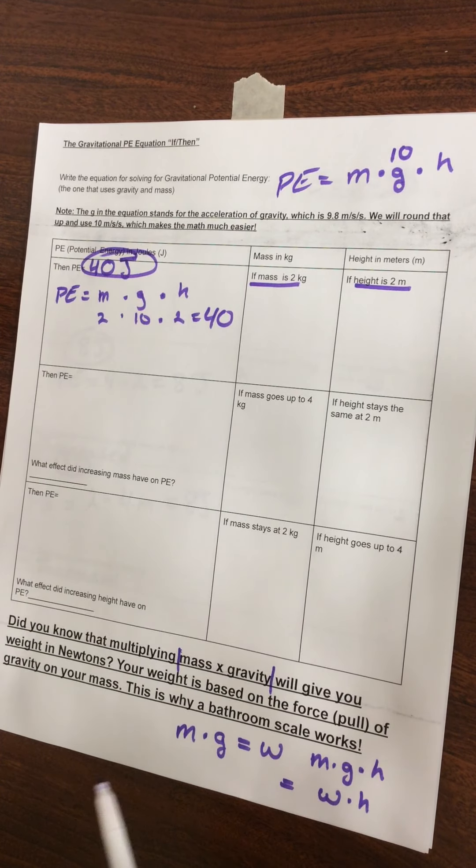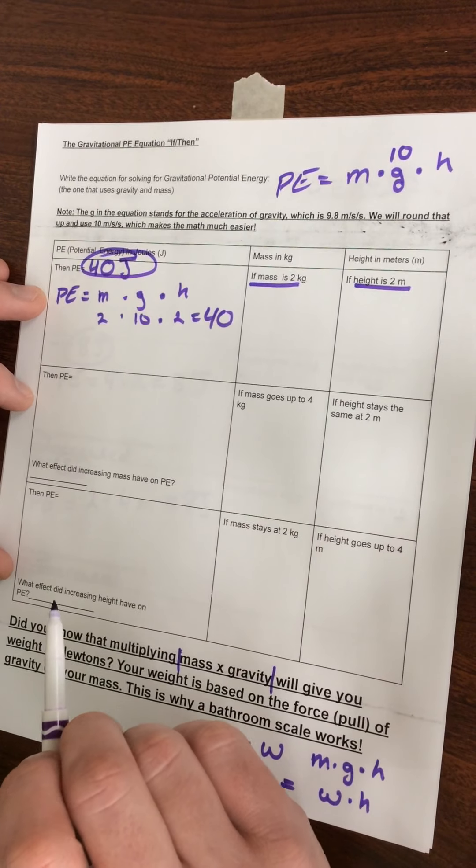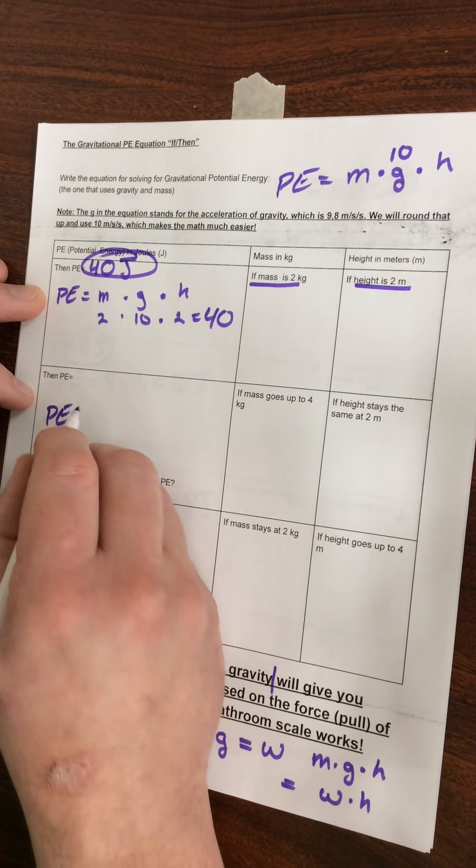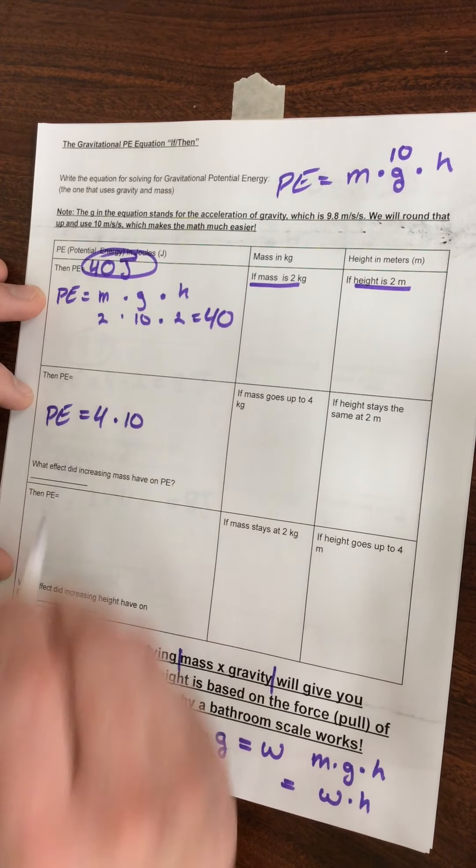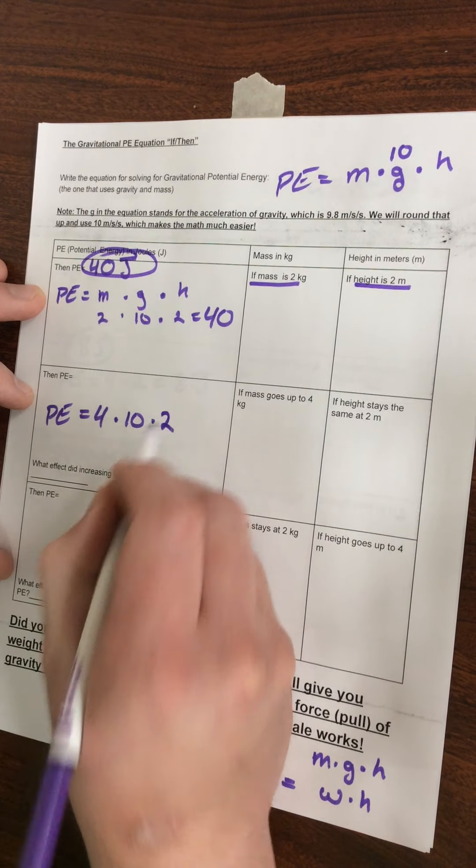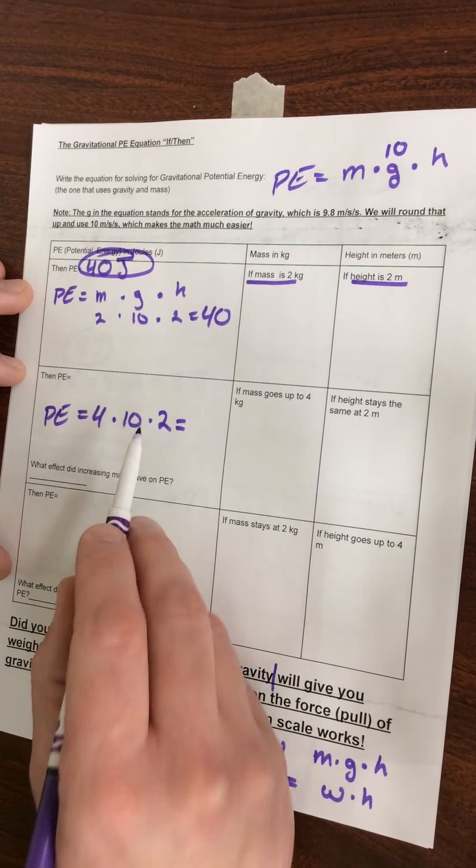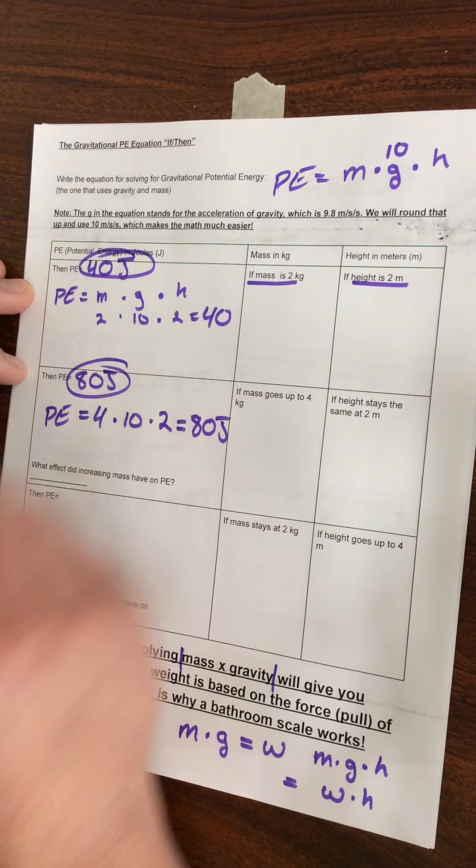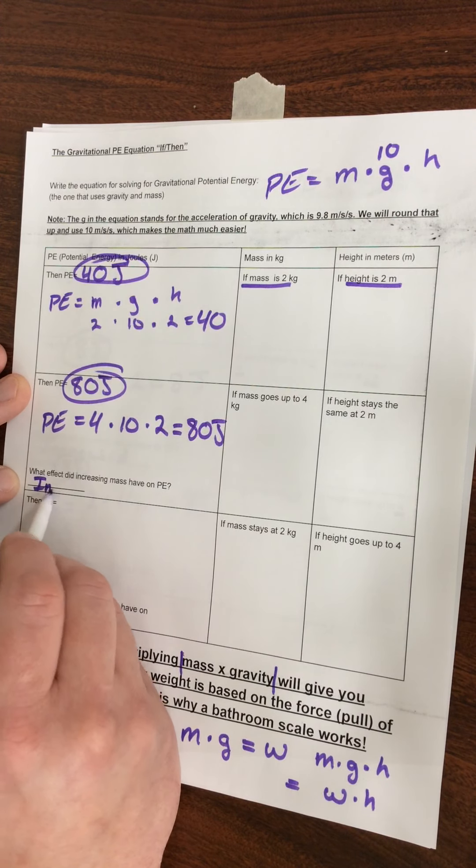Now we're going to do the same thing we did on the other two, and we're going to mess with the variables. We're going to increase one and leave one the same and see what effect it has on our gravitational potential energy. We're going to increase our mass to 4. So PE now equals 4, that's our mass, times our 10, which is our gravitational constant, times 2. 4 times 10 is 40, times 2 is 80. We end up with 80 joules. What effect did increasing mass have on potential energy? It increased it.